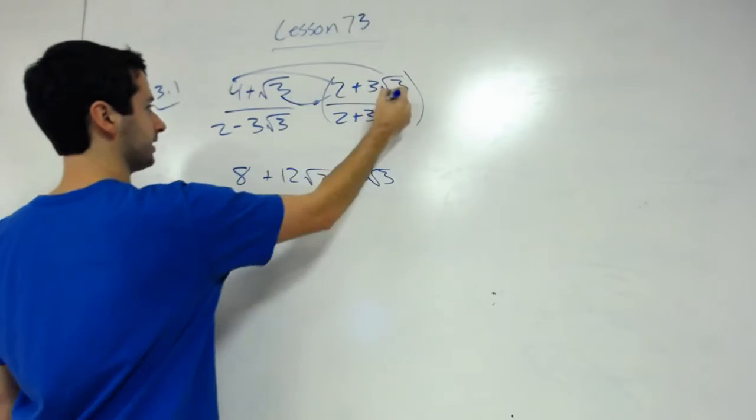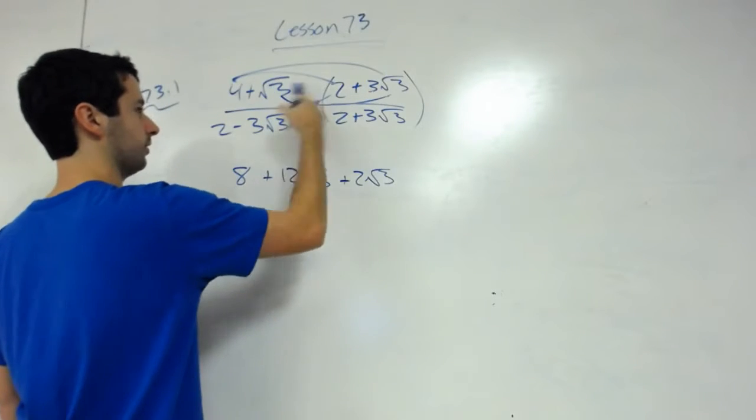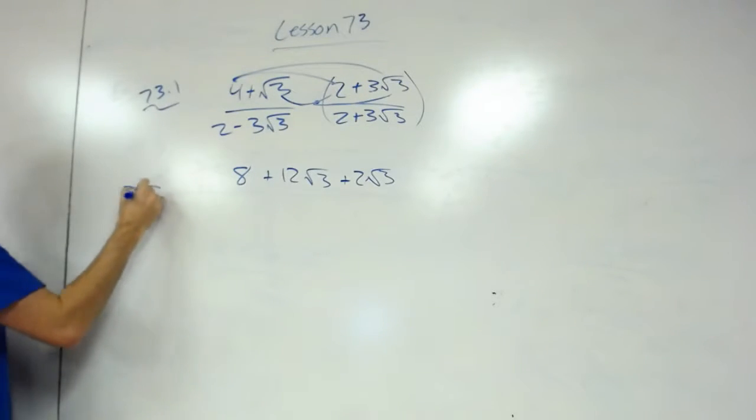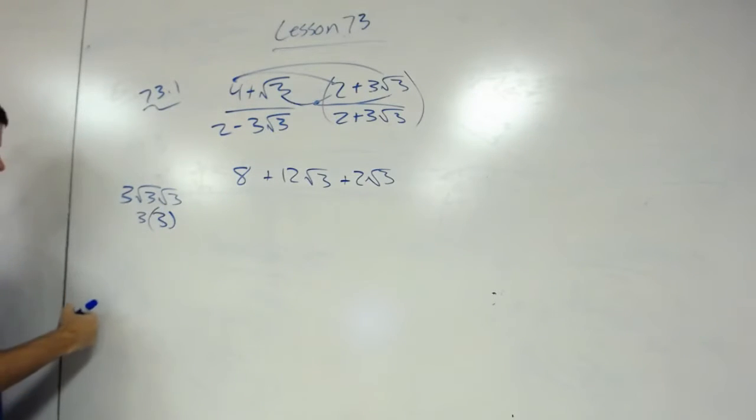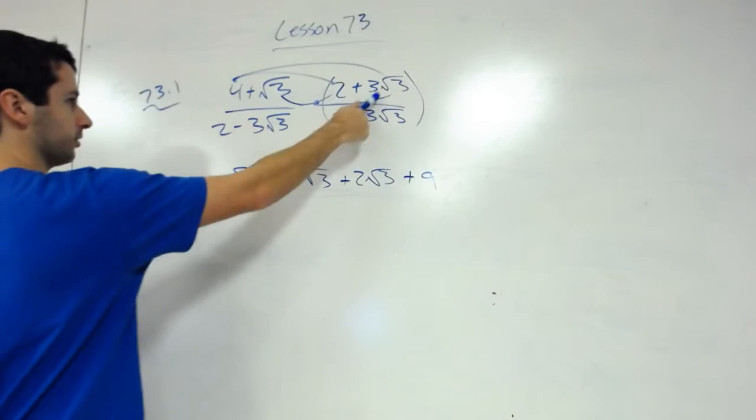And last, 3 times √3, you got 3 times √3 times √3, so that becomes √9 becoming 3. So 3 times 3 would be 9. Hopefully follow that there, but √3 times 3√3 is 9.